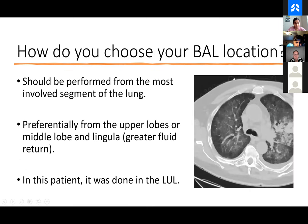How do you choose your BAL location? You want something representative. This is not so much true in fibrotic lung diseases where areas of fibrosis are often lower yield. Ground glass generally represents an active ongoing process, so we target the areas of densest ground glass. In this case it's actually the consolidation in the left upper lobe. The return from a BAL is always higher when gravity is helping you — meaning an airway in a segment oriented anteriorly. So the upper lobes, the middle lobe, and the lingula generally have the best return. Here they did it in the left upper lobe for all these reasons.